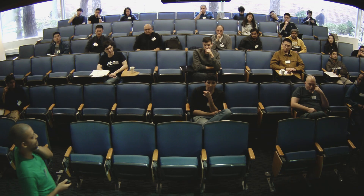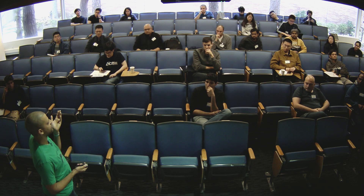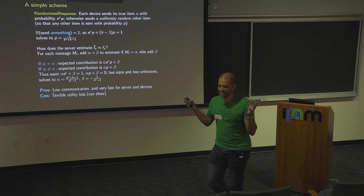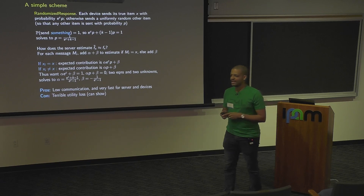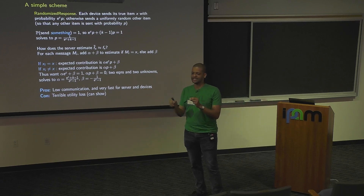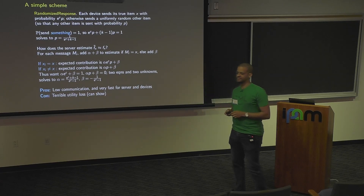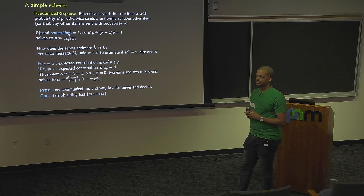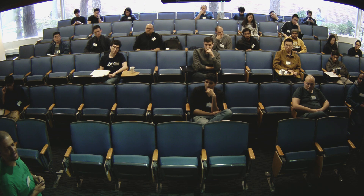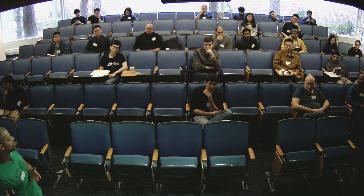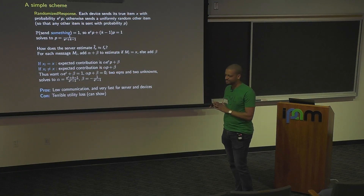The utility loss for randomized response scales as K times something — meaning your sample complexity to get good accuracy grows with dictionary size K, which is huge. If K were 2, it wouldn't be bad. But for large K, it's terrible in terms of utility.